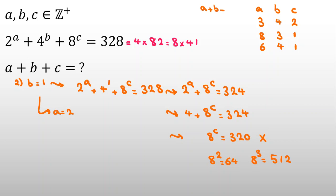So our only answers are the three found earlier. A plus B plus C equals 3 plus 4 plus 2 equals 9 for the first solution; 8 plus 3 plus 1 equals 12 for the second; and 6 plus 4 plus 1 equals 11 for the third.